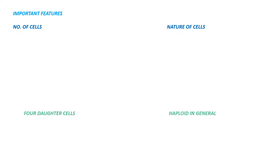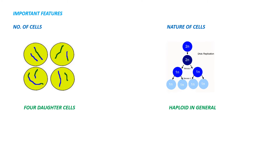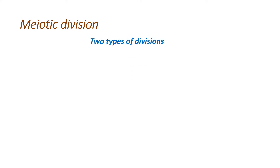The important features of meiosis: there are two key features — number of cells and nature of cells. Meiosis produces four daughter cells and these daughter cells are generally haploid in nature. The first reason the daughter cells are haploid is that meiosis involves only a single S phase — DNA synthesis occurs only once, though nuclear division occurs twice. The second reason is the separation of homologous chromosome pairs; they separate and enter into different cells.